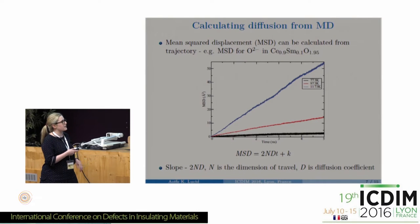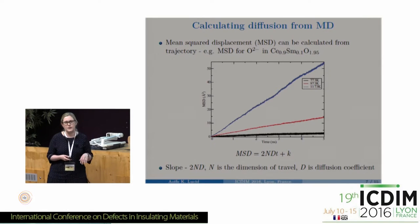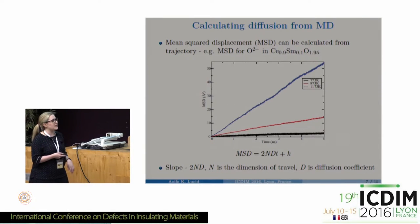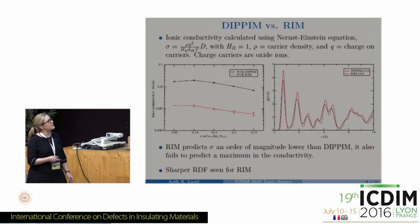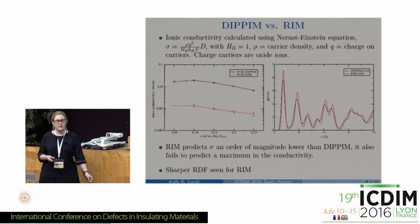The mean squared displacement (MSD) is calculated from the molecular dynamics trajectory, and from the MSD the oxide ion conductivity is investigated. The plot shows MSD versus time for a five nanosecond trajectory at three different temperatures, illustrating the strong temperature dependence. The slope of the MSD graph is 2ND, where N is the dimension of travel and D is the diffusion coefficient, with K as a Debye-Waller factor. Diffusion coefficients are then used to calculate ionic conductivity via the Nernst-Einstein equation.